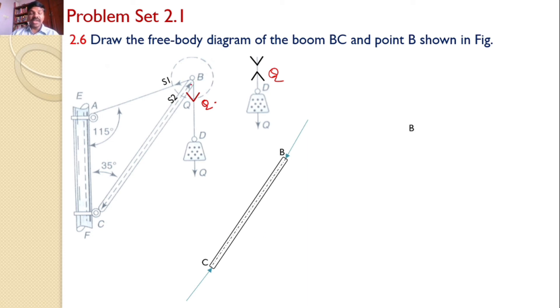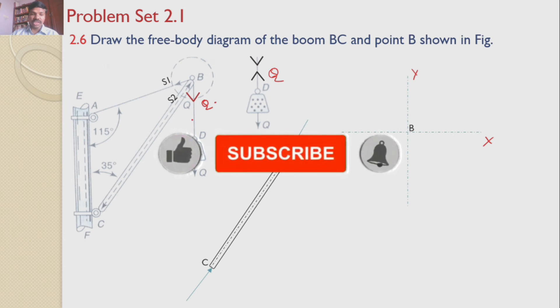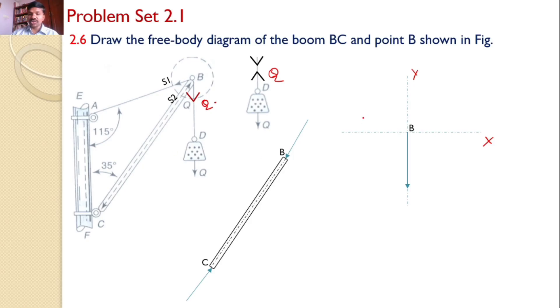Now let us consider the various forces that are acting at point B. I am considering my xy axis. This is my point B. What are the various forces? The first force is Q acts along BD and it is downwards. So this force acts along BD and downward direction, and the magnitude is Q. The next one is the force in the string AB. It is along AB and it is away from point B, and the magnitude is S1. So away from point B, along AB, and the magnitude is S1.